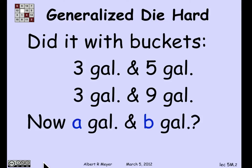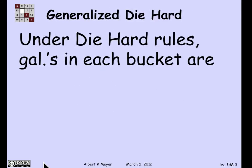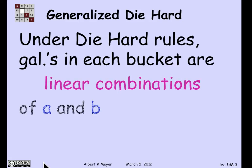Suppose I have jugs of A gallons and B gallons, where A and B are positive integers. When we looked at the state machine, we figured out that under the Die Hard rules, the number of gallons in each bucket at any stage is a linear combination of the bucket sizes. So at any point, after any sequence of Die Hard moves, in each bucket there will be a linear combination of A and B.